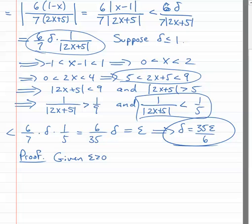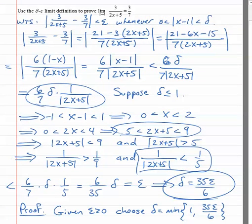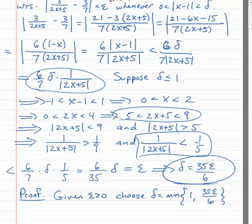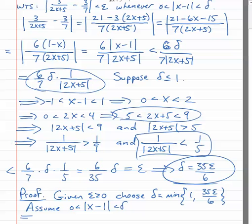Given epsilon greater than zero, let's choose delta to be the minimum of one and thirty-five epsilon over six. Remember the actual limit is the limit as x approaches one of three over two x plus five equals three sevenths. We're going to assume that zero is less than the absolute value of x minus one is less than delta. What does that imply?